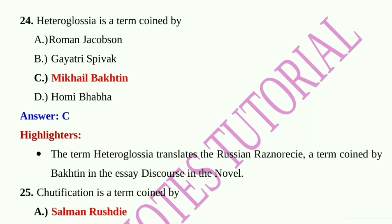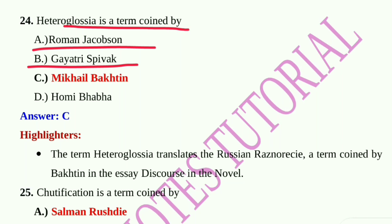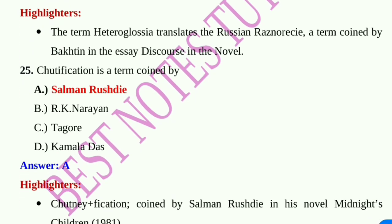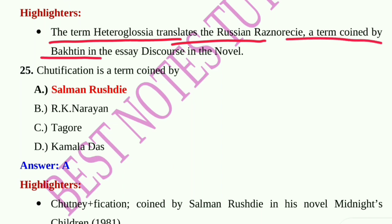Question number 24: Heteroglossia is a term coined by — Roman Jakobson, Gayatri Spivak, Mikhail Bakhtin, or Homi Bhabha? Option C, Mikhail Bakhtin, is correct. The term heteroglossia translates the Russian raznorechie, coined by Bakhtin in his essay Discourse in the Novel.